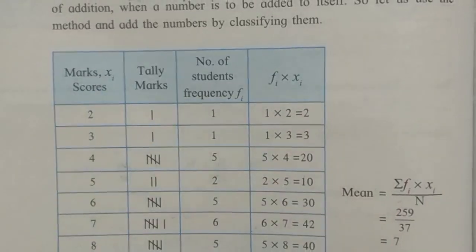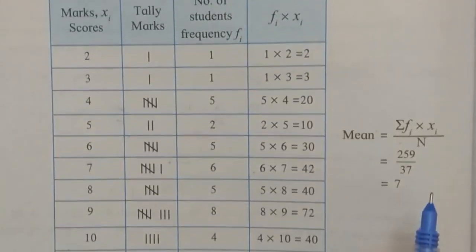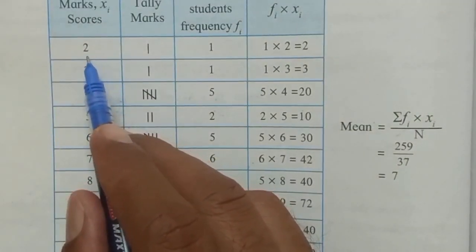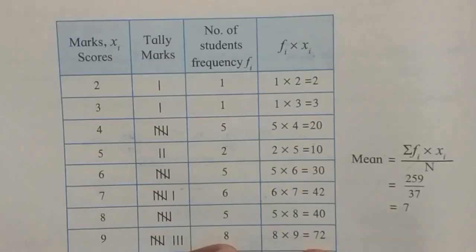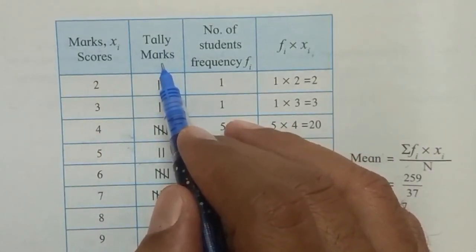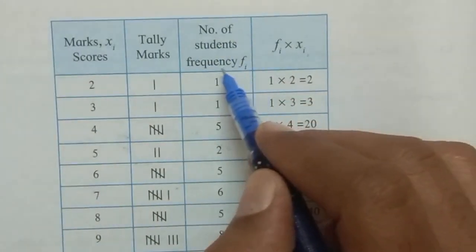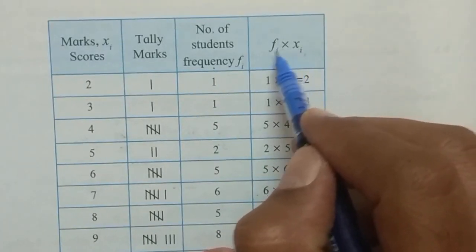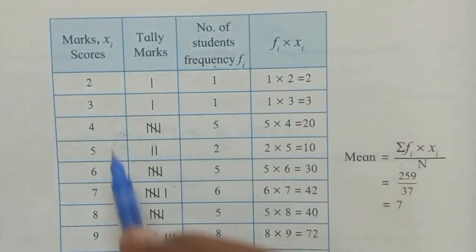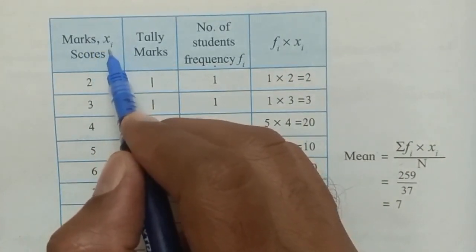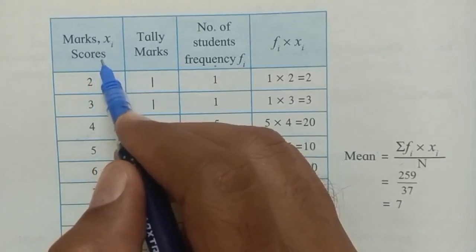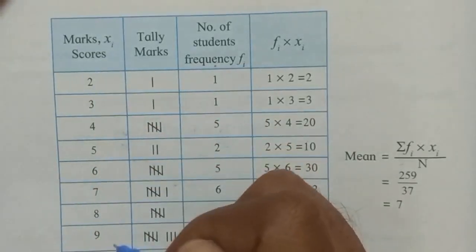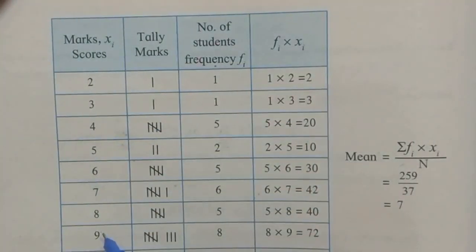Scores go from 2 to 10. The tally marks show how many students got each score: score 2 — one student, so one line. Score 3 — one student. Score 4 — count the tally: 1, 2, 3, 4 and one more line makes a bundle of 5. Score 5 — 2 students, two lines. Score 6 — 5 students. Score 7 — 6 students (one bundle of 5 plus one). Tally marks help ensure no score is missed and counting is accurate.